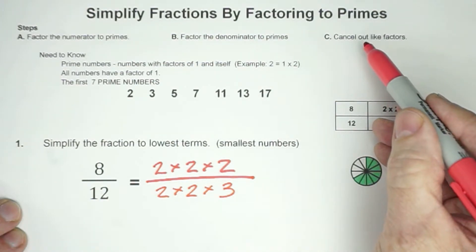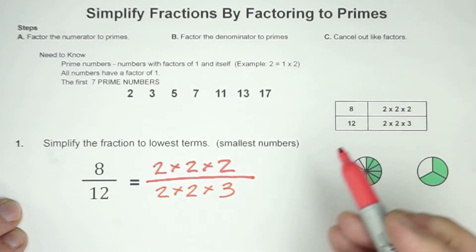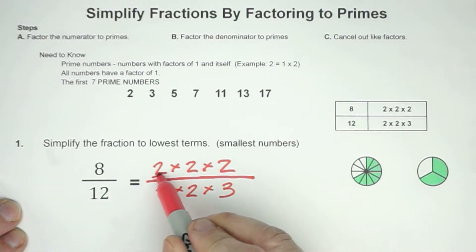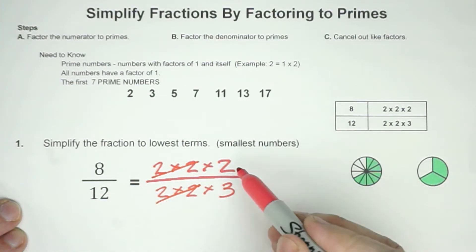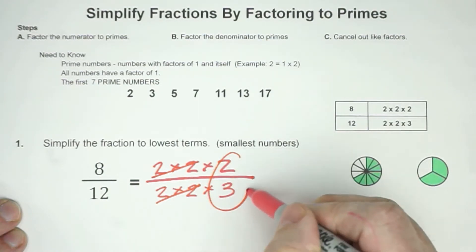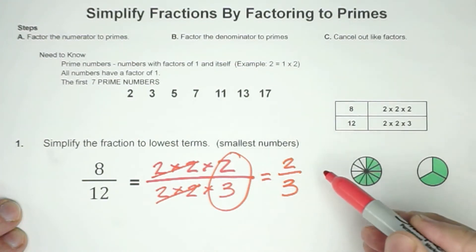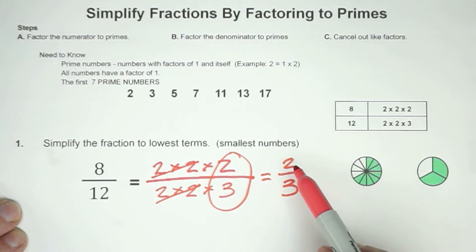Then our last step is to cancel out like factors. So for example, I see 2 times 2, and I also see 2 times 2, so these are going to cancel out. I'm not going to cancel out this 2 because there's not another 2 here. So notice that our equivalent fraction is 2 thirds. In other words, 8 twelfths simplifies to 2 thirds, and what we did is we used prime factoring.